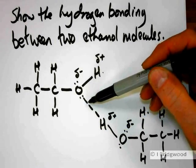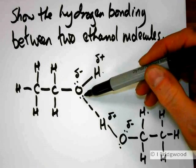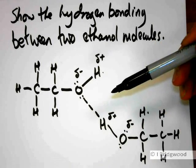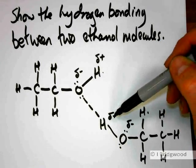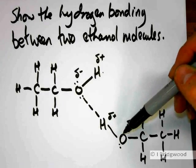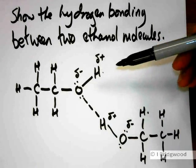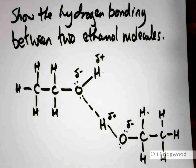There's our hydrogen bond. We've got the available lone pair of electrons, which is very important to make sure that you have, and we're also showing the partial charges, which are important and significant in this particular case.